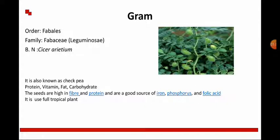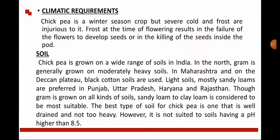The first legume is Gram, that means Cicer arietinum, also known as chickpea. Gram contains protein, vitamins, fat, and carbohydrates. The seeds of gram contain fiber, protein, and are a good source of iron, phosphorus, and folic acid. It is a useful tropical plant.